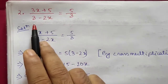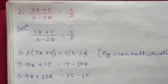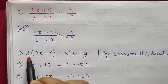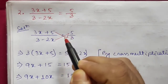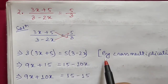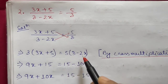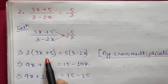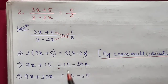Question 2: (3x + 5) / (3 - 2x) = 5/3. Using cross multiplication, we multiply 3 × (3x + 5) and 5 × (3 - 2x). This gives 3 × 3x = 9x, 3 × 5 = 15, then 5 × 3 = 15, and 5 × 2x = 10x. So we get 9x + 15 = 15 - 10x.